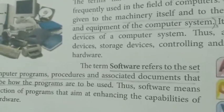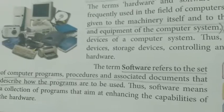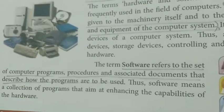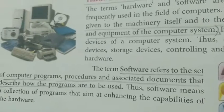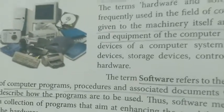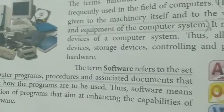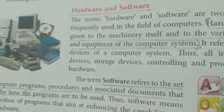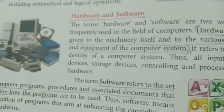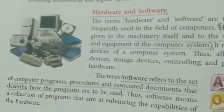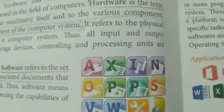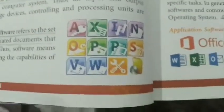The next term is software. Software refers to the set of computer programs, procedures, and associated documents that describe how the programs are to be executed. Examples of software include MS Word, MS Excel, and Windows — their icons are shown here.